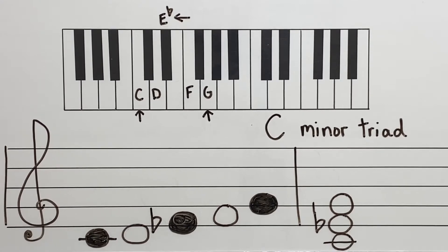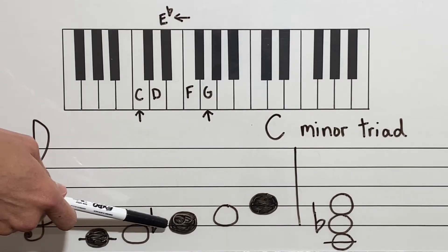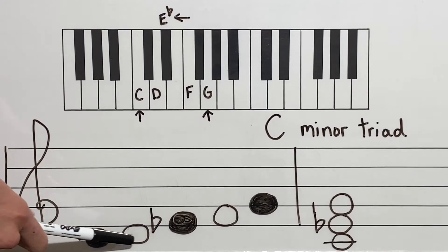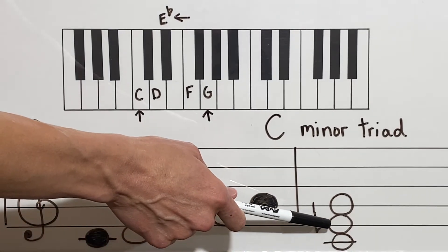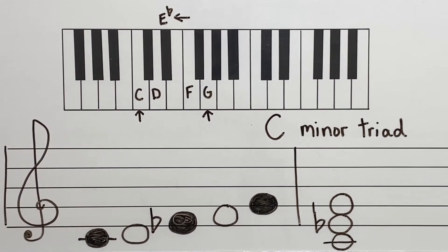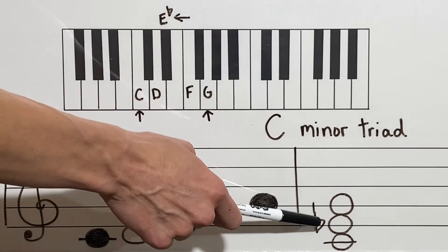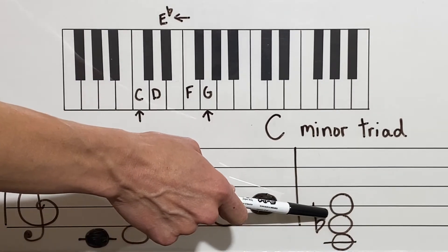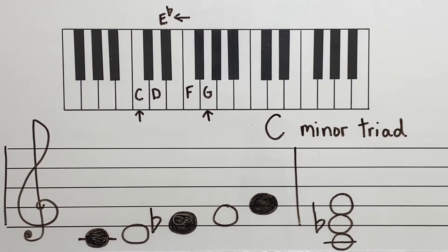Now let's figure out how to write it on a musical staff. Down here we have our treble clef and I have written my C minor five finger pattern: C, D, E flat, F, and G. I have colored in the root, the third, and the fifth — those are the only three notes we need for our C minor triad. I take these and stack C, E flat, and G directly on top of each other. This is what our C minor triad looks like on the musical staff. Also notice these triads are all going to be line, line, line or space, space, space.